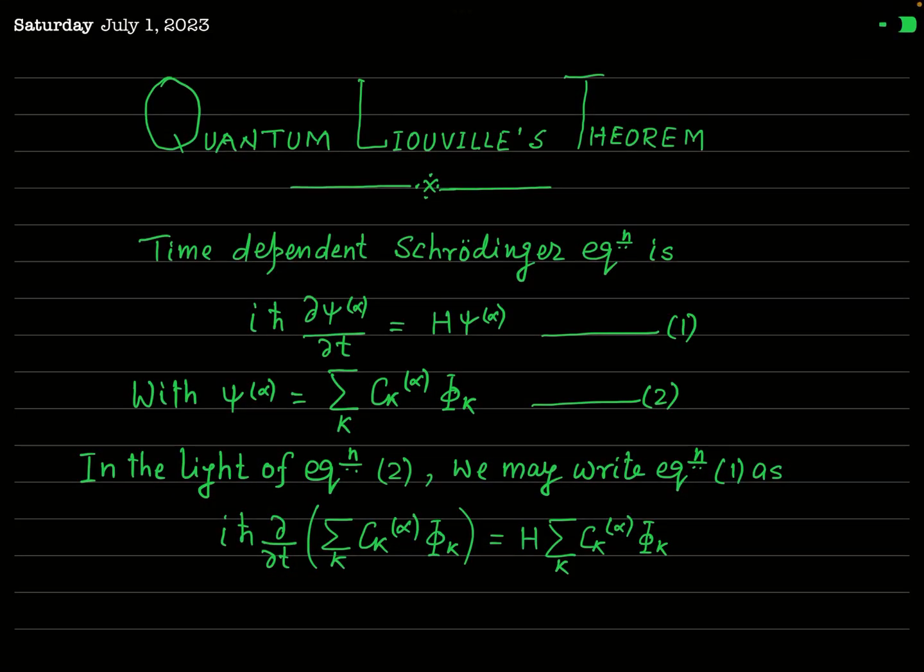In this lecture, our aim is to discuss the time dependence of the density matrix. As you have learned about the density matrix already in the previous lecture, it is now easy to see how this density matrix depends on time. The equation we will obtain to show the time dependence of the density matrix is the quantum mechanical form of Liouville's theorem. We have already learned about Liouville's theorem in the previous lecture — that was the classical version.